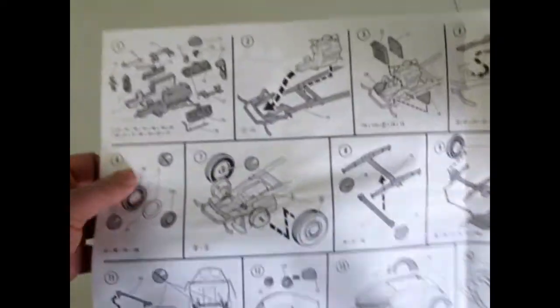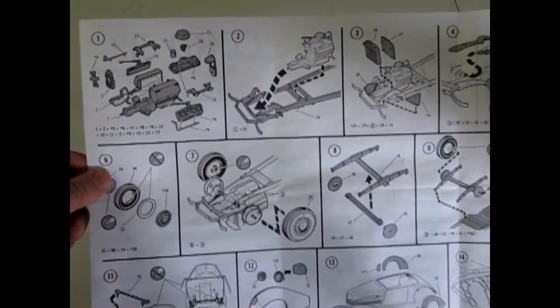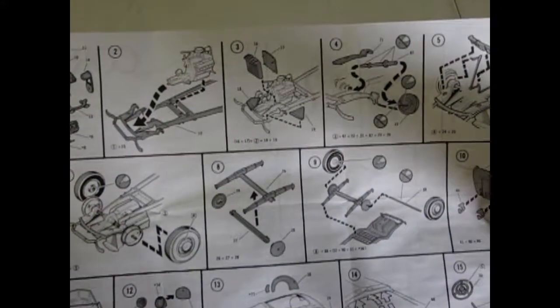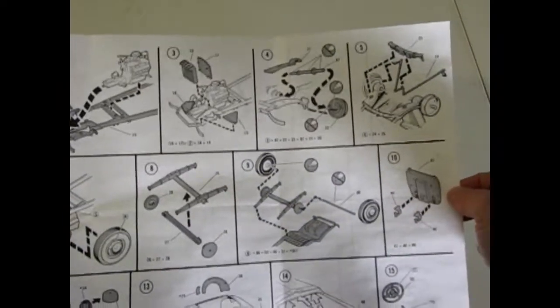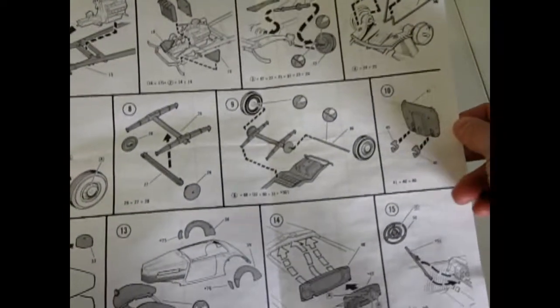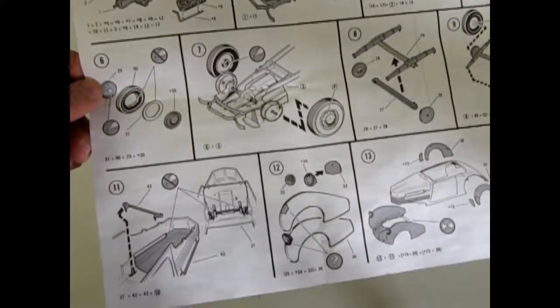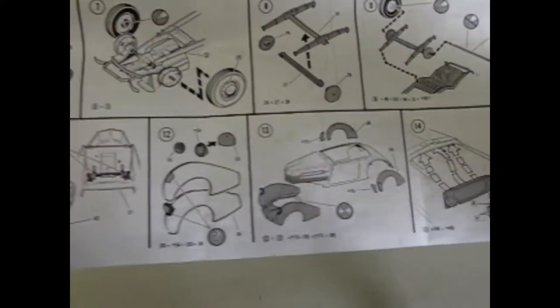And as you can see by opening the instructions that Monogram uses a very simple easy building type of model. The parts usually go together very nice without very many gaps or other complications. And back in the 70s they had a real good series of classic cars.